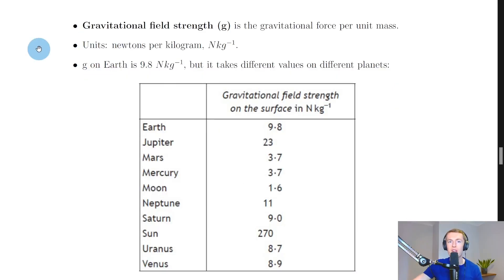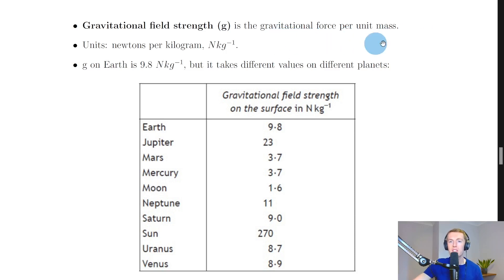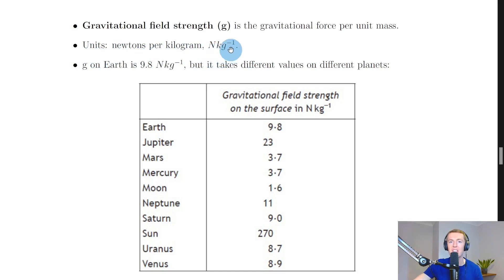The definition you need to learn for the exam is: gravitational field strength is the gravitational force per unit mass — or equivalently, the weight per unit mass. You can think of it as the gravitational force exerted on one kilogram of mass. The units are Newtons per kilogram, written as N kg⁻¹ or N/kg.